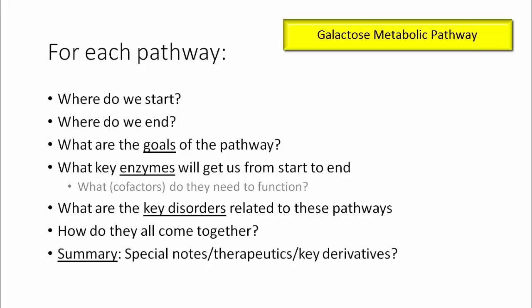Today we'll be talking about galactose metabolism, and as in all of our pathways, we'll try to focus on specific elements that will help us navigate our way through questions we're likely to see on our Step 1 exam. The elements we'll be focusing on are: where the pathway starts, where it ends, what the goals of the pathway are, what the key enzymes are and what cofactors they need, and especially what the key disorders related to these pathways are. At the end, we'll summarize with special notes, therapies, and key derivatives of galactose metabolism.